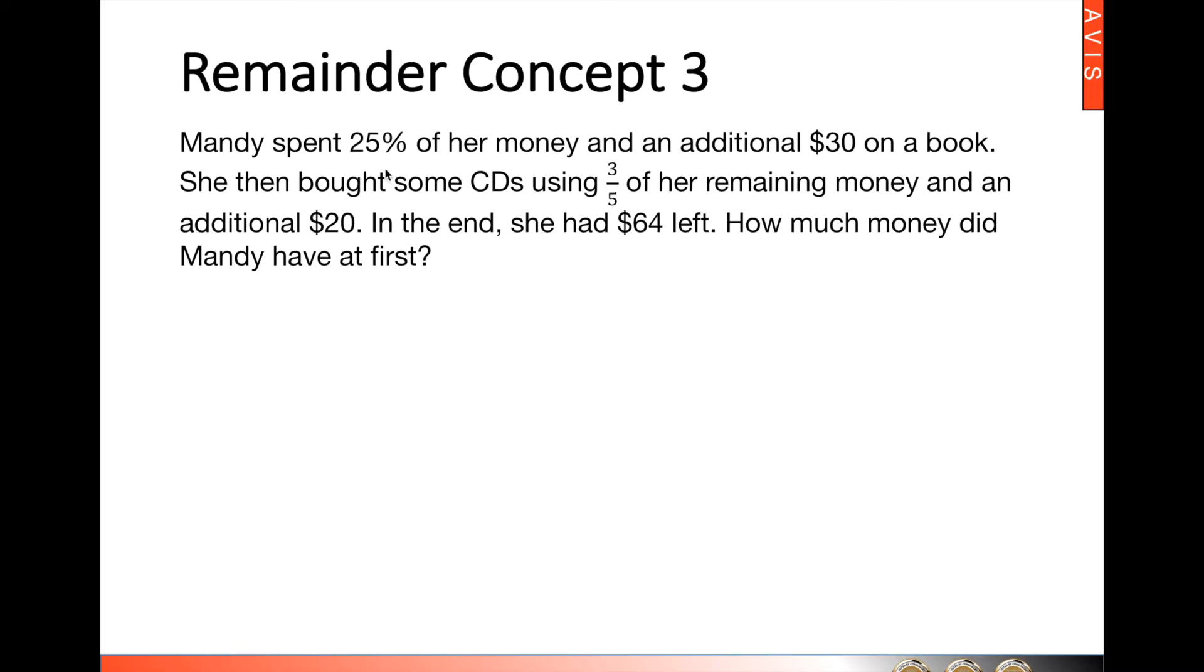Mandy spent 25% of her money and an additional $30 on a book. Now, 25% is one quarter, so this is what we do. Book, one quarter of it, plus another $30. Hence, whatever that remains is three quarter, but we have to take away these $30 because it went there.